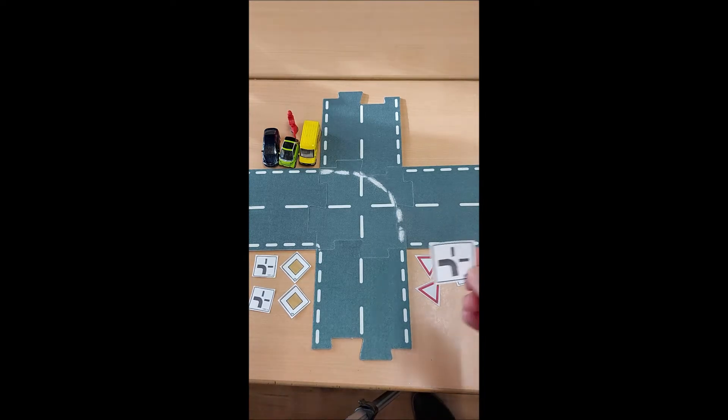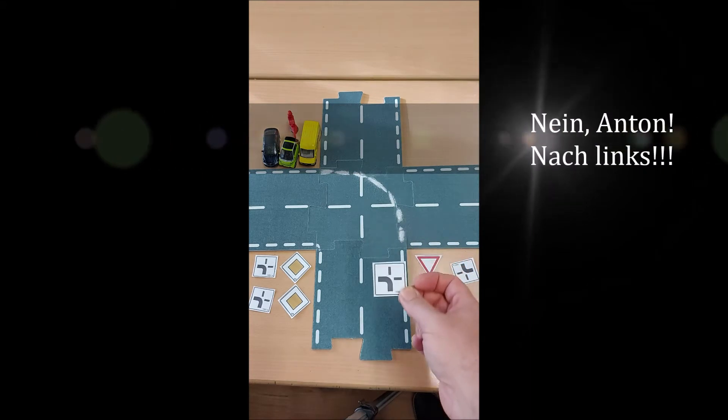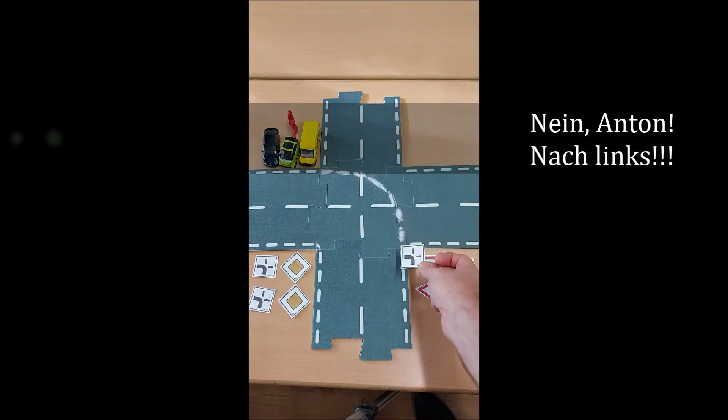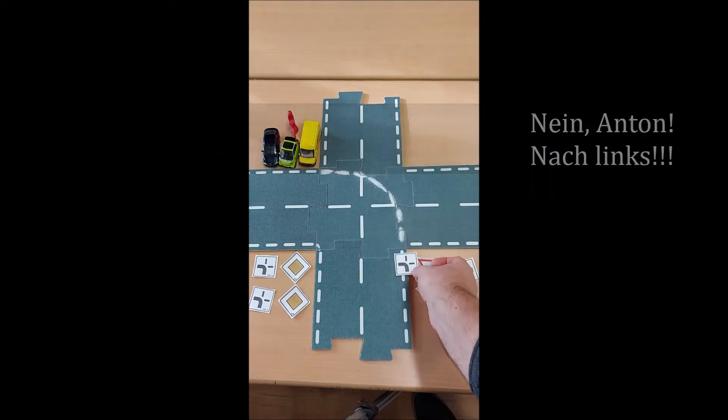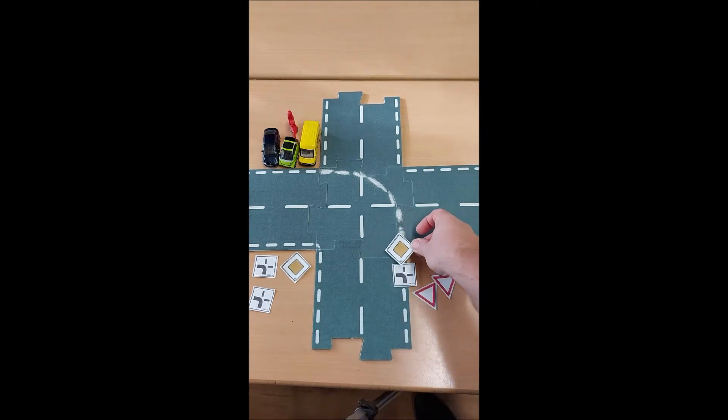Schaut mal, so sieht das hier aus. Der dicke Balken biegt nach rechts, schaut, die Vorfahrtsstraße. Und die beiden kleinen sind da oben. Also, so sieht die Kreuzung von hier aus. Weil man auf der Vorfahrtsstraße ist, hat man ein Vorfahrtsschild.